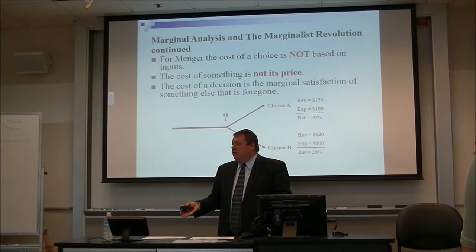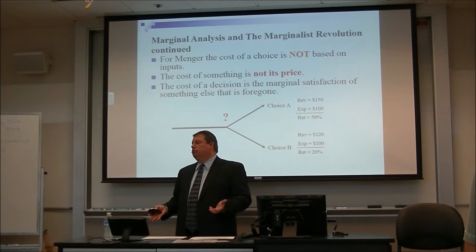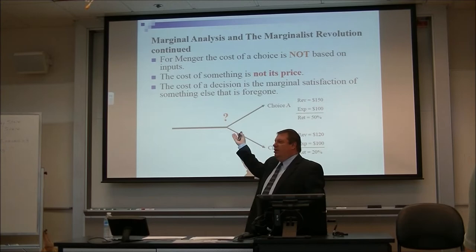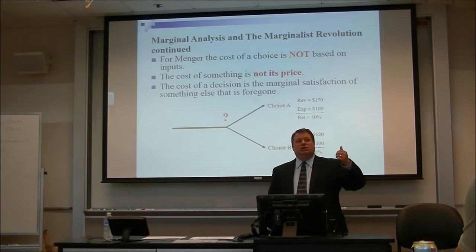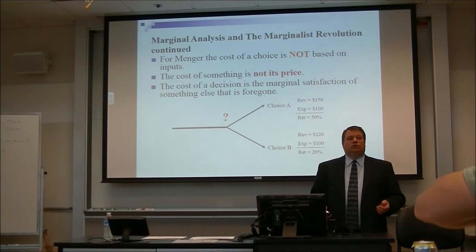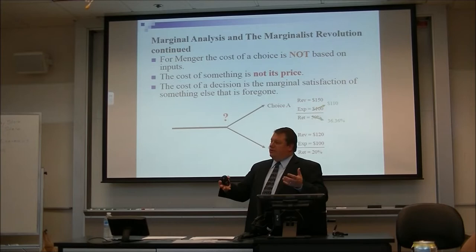If I have choice B with a $100 expenditure yielding $120, that's a 20% rate of return. So which do I choose? A — it's bigger, more return. But the cost is not the $100. It's the next best thing I could have obtained, which is the 20% I could have received with choice B. As conditions change — say input prices go up — the cost of my decision of A is still that 20%. That hasn't changed.